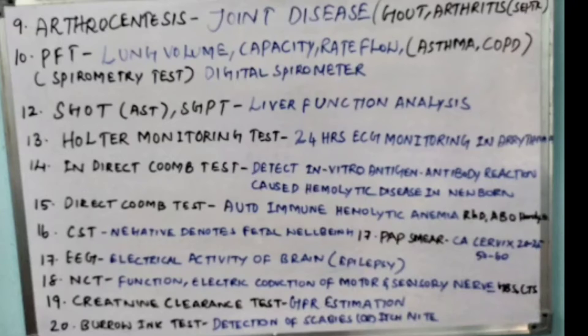The Coombs test is done to find out autoimmune hemolytic anemia, such as RHD hemolysis or ABO hemolysis.